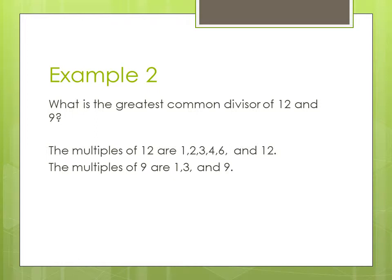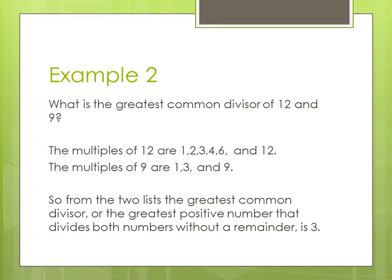And we know the multiples of 9 are 1, 3, and 9. So from the two lists the greatest common divisor or the greatest positive number that divides both numbers without a remainder is 3.